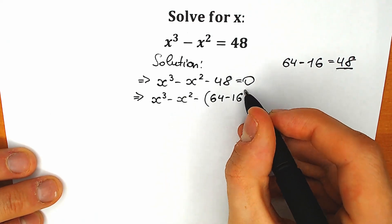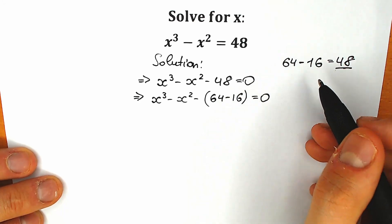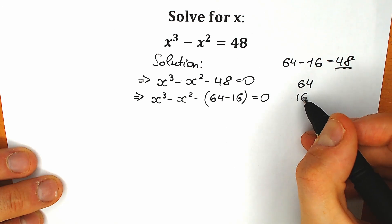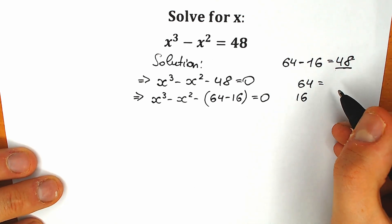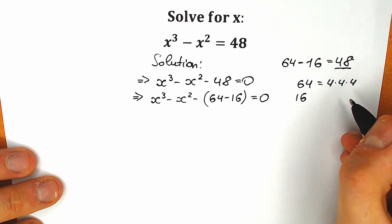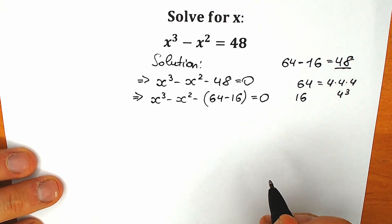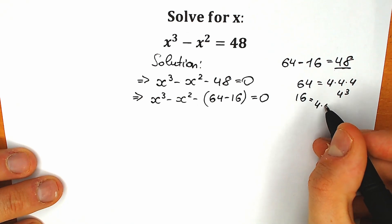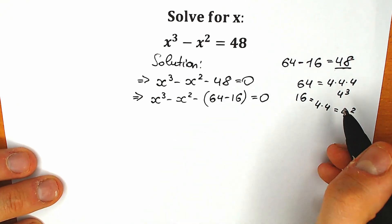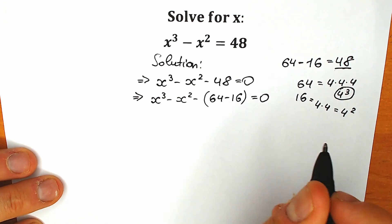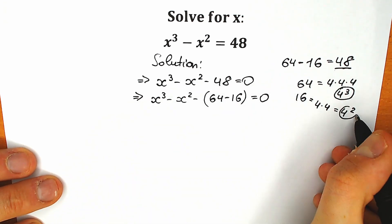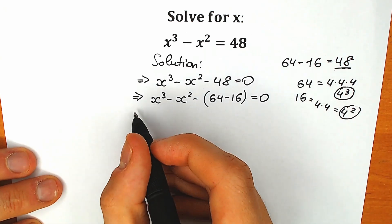A lot of students ask me why I do this. If we look closely at these both values — 64 and 16 — 64 we can easily write as 4-cube, because 64 equals 4 times 4 times 4, which equals 4-cube. And 16 equals 4 times 4, equal to 4-square. This is extremely important because we have the third power and the second power, so we can easily group them.